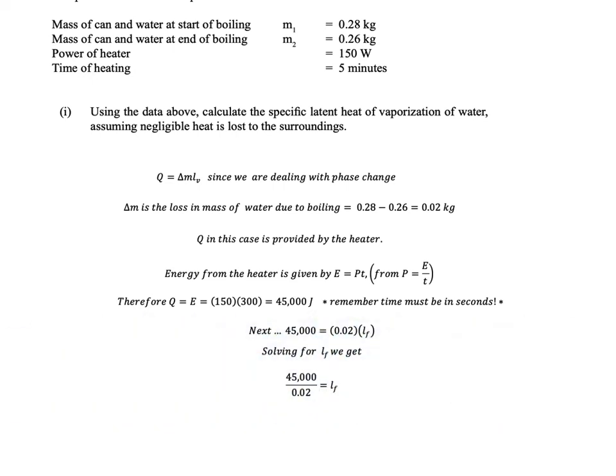Alright, we solve for Lv, so we get 45,000 divided by 0.02, and boom, we get 2,250,000 joules per kilogram, or 2.25 megajoules per kilogram, and that's us. I hope everybody could have worked that out or most people, but yeah, we got that.